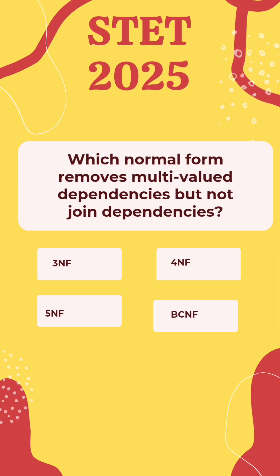Which normal form removes multi-valued dependencies but not join dependencies? Options: 3NF, 4NF, 5NF, BCNF. The correct answer is 4NF.